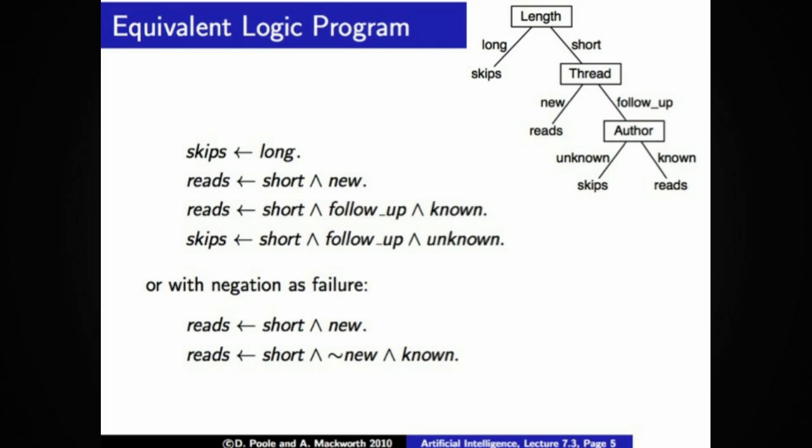Collectively, you could take the two reads clauses, combine them with a disjunction, and you would have a characterization of what this decision tree asserted as the conditions under which someone would read a blog post. And the same with skips. At the bottom, you see, or with negation as failure. This simply means that all we need to do really is characterize the conditions under which someone would read the blog post, leaving out an explicit representation of when they would not read it. So if new data does not satisfy either of those reads conditions, it must be a situation in which the person would skip.